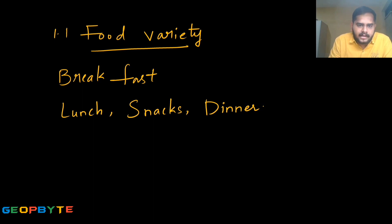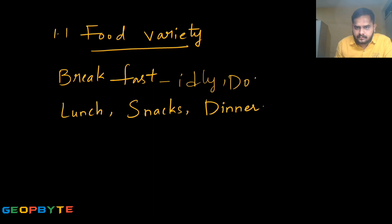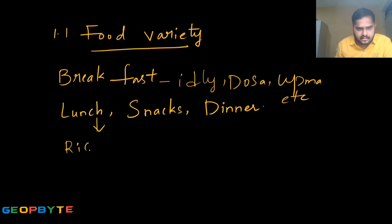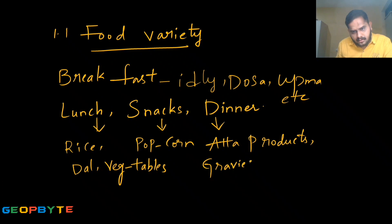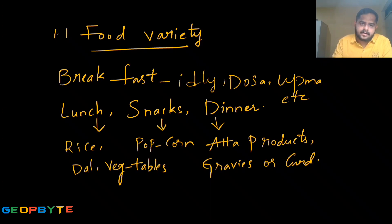Though we eat different types of food in different stages, the origin of making the food is one and only the same. For example, in breakfast we have idli, dosa, soup, etc. For lunch we have rice, dal, vegetables. In snacks we eat corn or popcorn. In dinner we have wheat products, gravies, vegetables, or curd. So though we have different types of food in different manners, the origin of these food products is one and only the same.